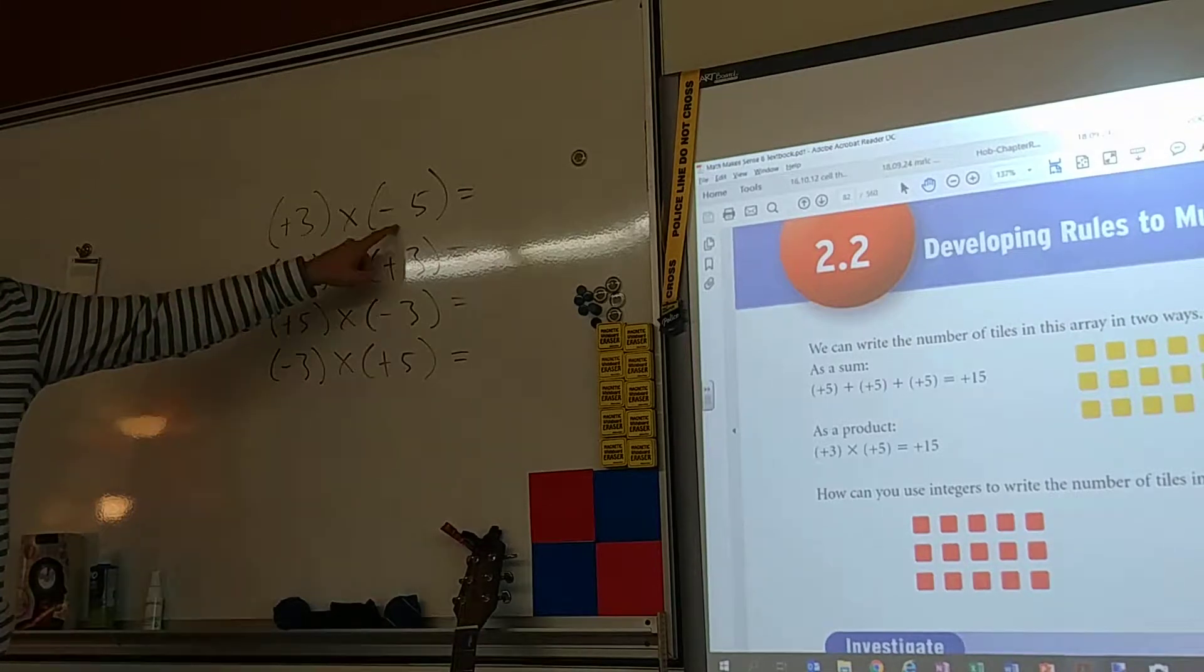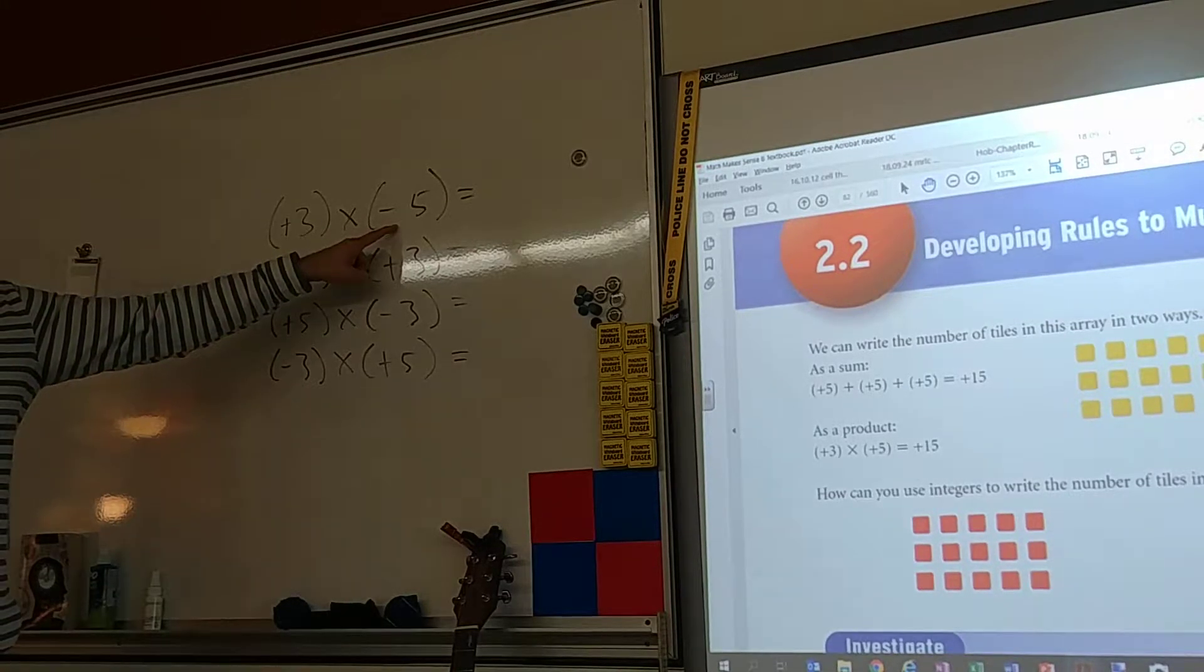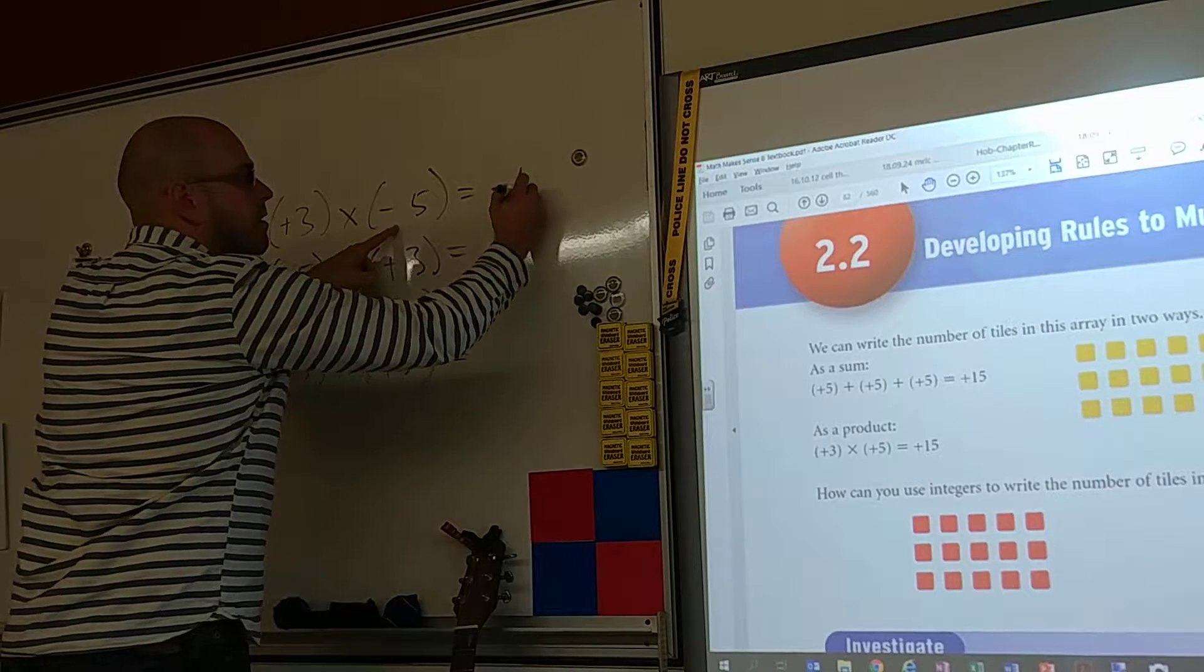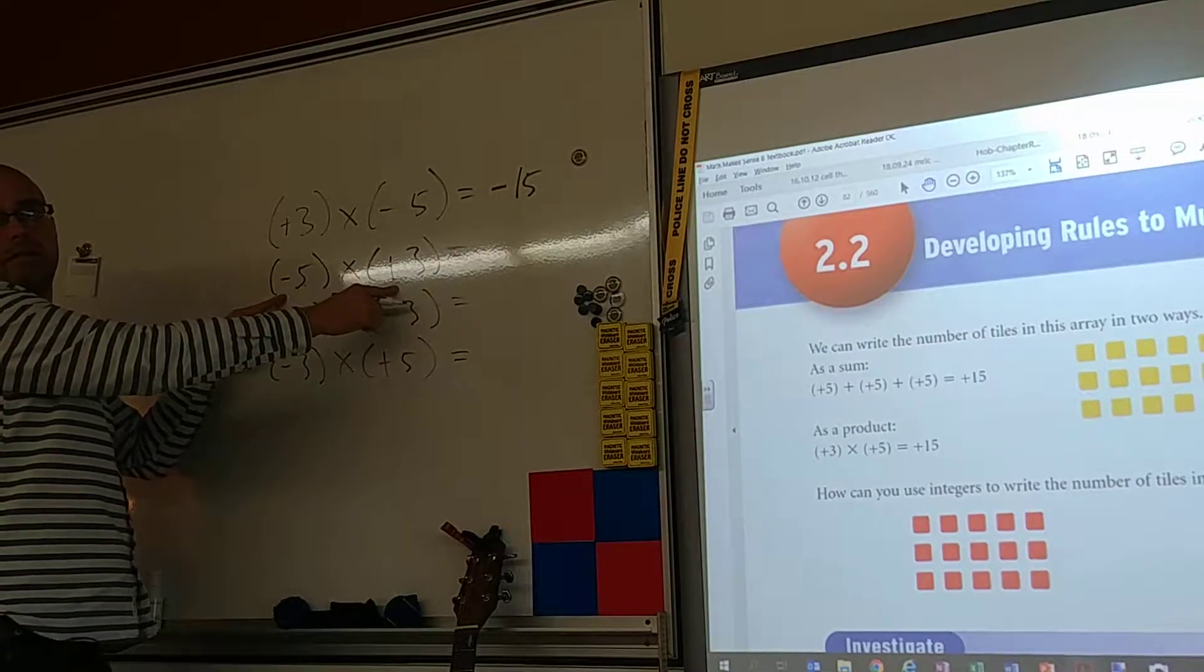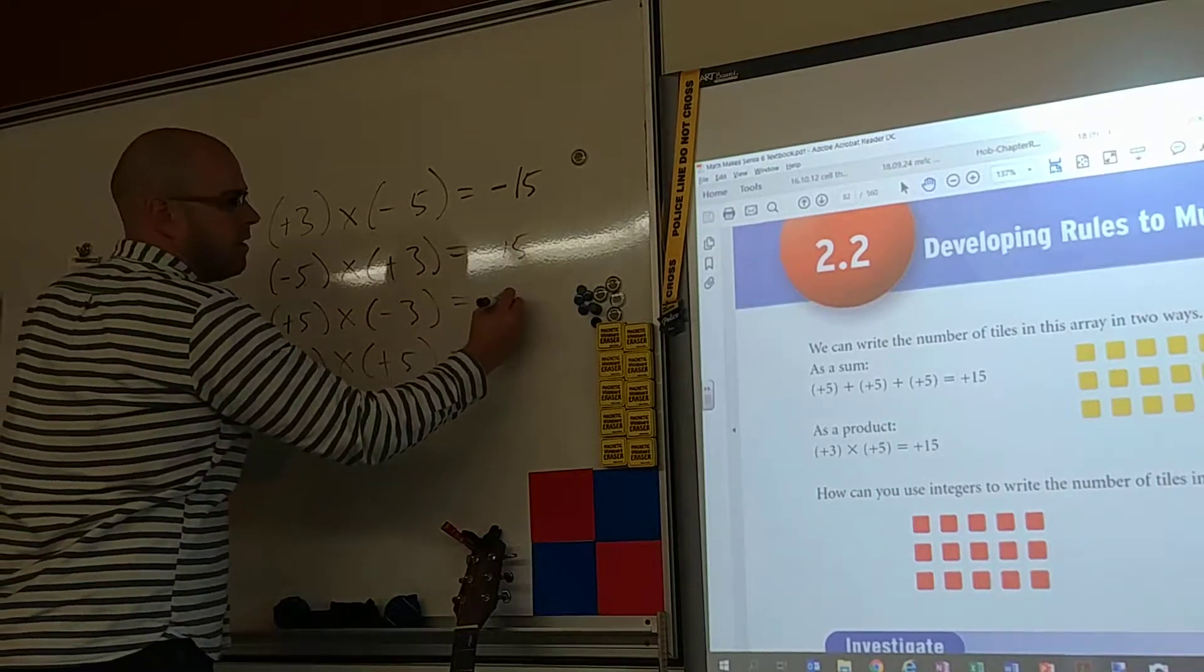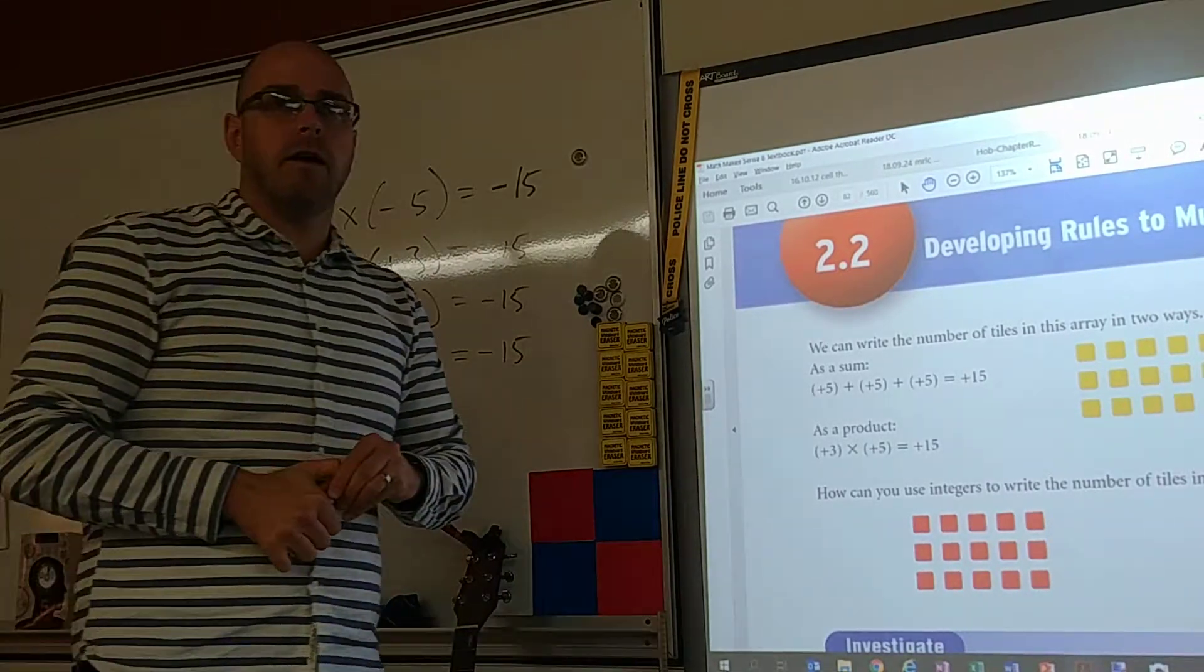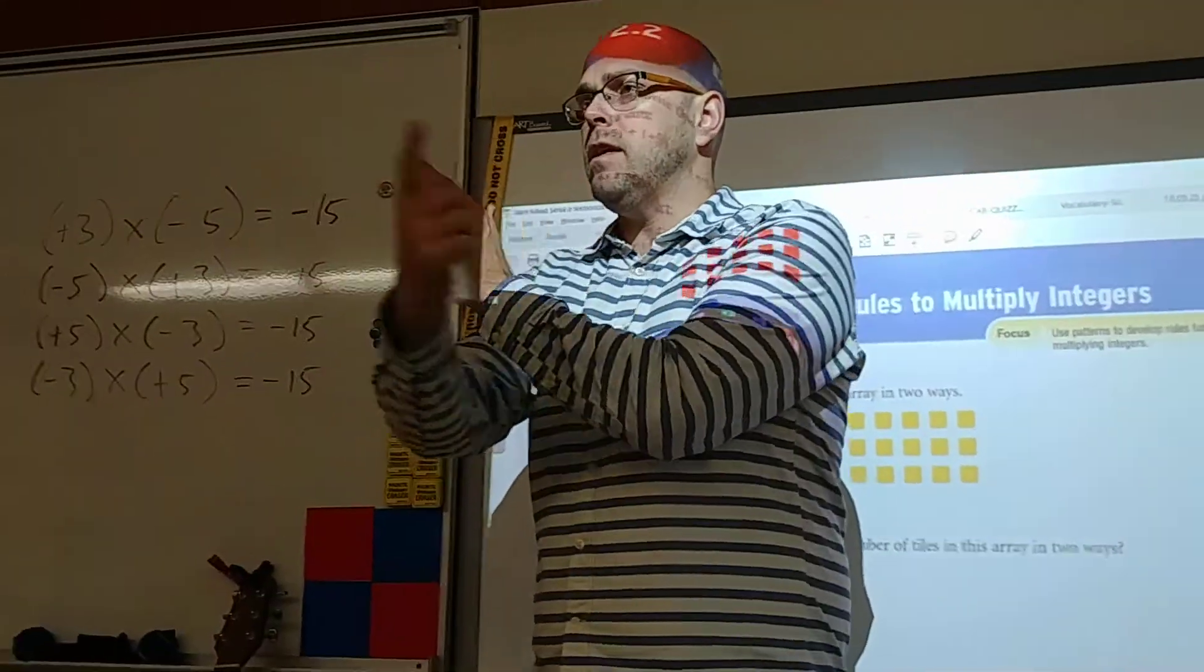If I multiply a positive and a negative, what's my sign? Positive or negative? Negative. It's going to be a negative. And what's 3 times 5? Negative. Positive. Or a negative times a positive? Negative. Negative times a negative. Positive times a negative? Negative. Negative times a positive? That's the same question. That is the commutative property.